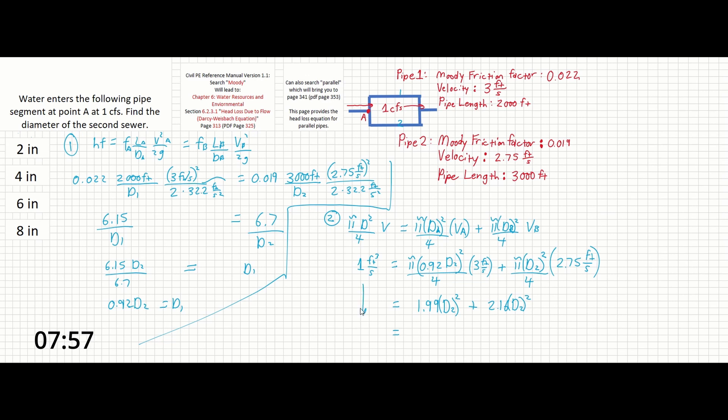1 cubic feet per second equals 4.15 d2 squared and solving for d2 here, 1 cubic feet per second gives us a final answer of 0.49 feet.